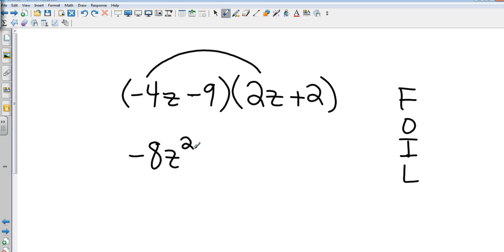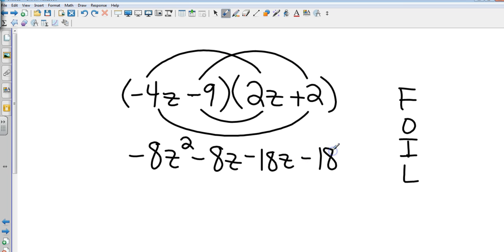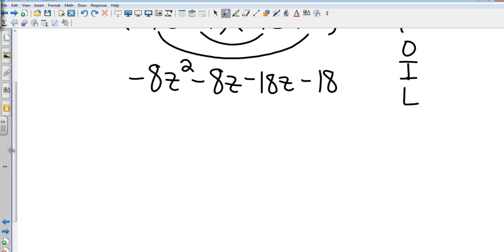Okay, go ahead and hit pause and work through your FOIL method. Okay, first terms: negative 8z². Outside terms: negative 8z. Inside terms: negative 18z. And last terms: negative 18. Combine like terms: negative 8z², negative 8 minus 18 is negative 26z, and then minus 18.